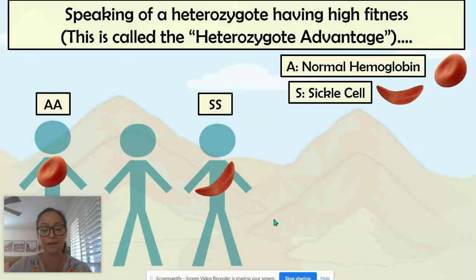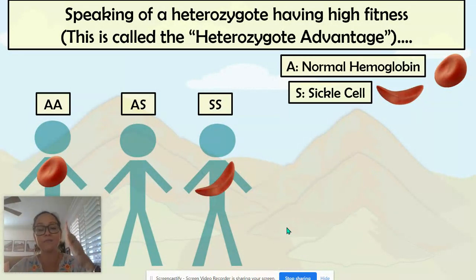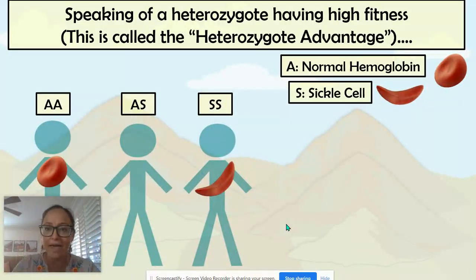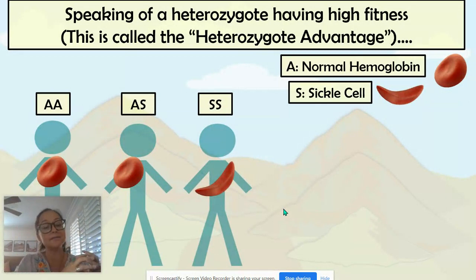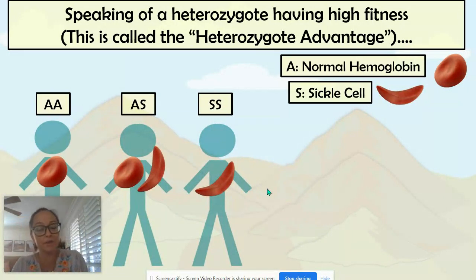The cool thing is that these alleles are co-dominant. So if a person is a heterozygote, one chromosome will direct making normal round hemoglobin shapes giving normal red blood cells, while their other chromosome in their diploid pair carries the mutation directing sickle cell shape. So some of the red blood cells will have a sickle shape and some will have a round shape.